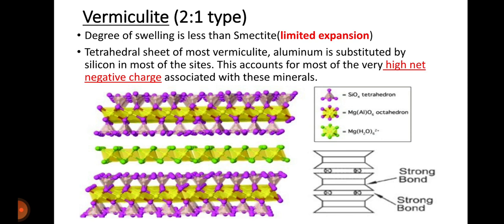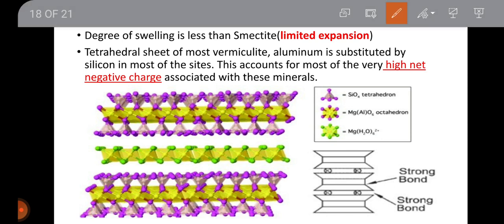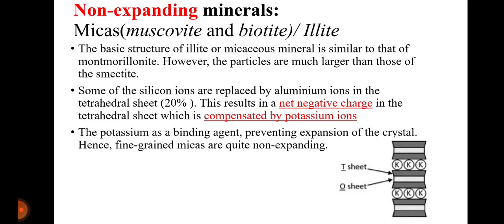Vermiculite is a 2:1 type clay mineral, but the degree of swelling is less than smectite — it shows limited expansion. Vermiculite has structural characteristics similar to montmorillonite, but in the tetrahedral sheet, aluminium is substituted for silicon at most sites, resulting in a high negative charge. Due to this high negative charge, water molecules along with magnesium and other ions are strongly absorbed in the interlayer, so vermiculite has limited expansion — more than kaolinite but less than smectite.